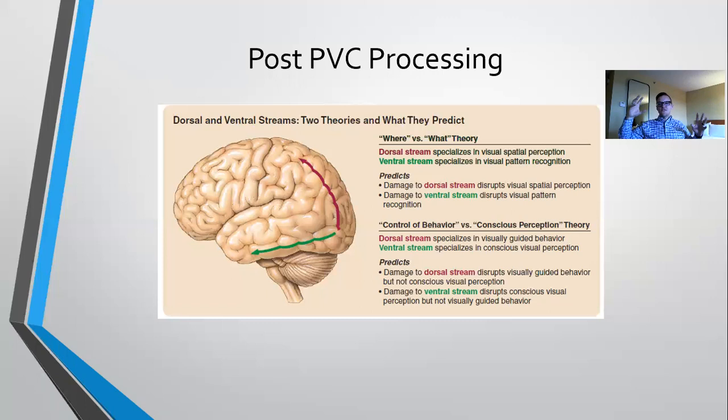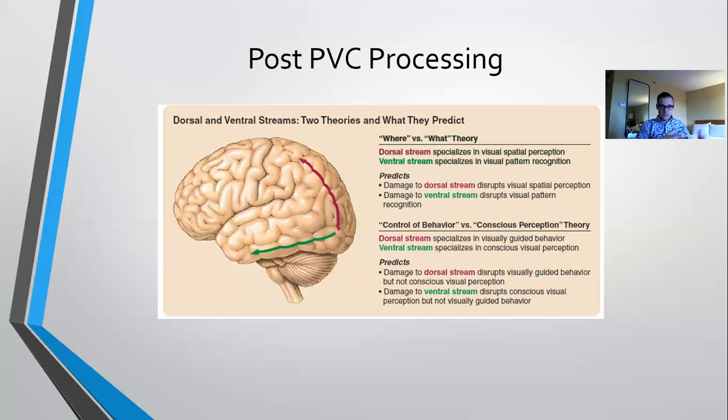These two pathways process different features of our visual environment. Simply put, the ventral pathway helps us recognize things about the stimulus — recognition and identity-based information — whereas the dorsal pathway processes more utilitarian features of the visual system: where something is and how to interact with it.